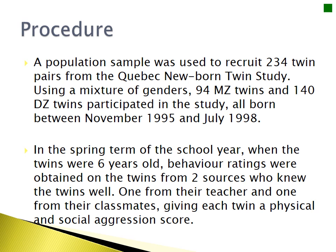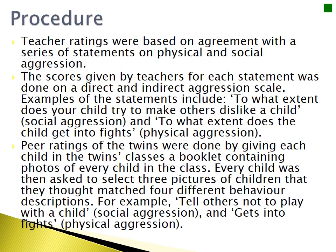In the spring term of the school year when the twins were six years old, behaviour ratings were obtained from two sources who knew the twins well: one from the teacher and one from their classmates. Each gave the twin a physical and a social aggression score. The teacher ratings were based on agreement with statements on direct and indirect aggression scales. Examples include: 'to what extent does your child try to make others dislike a child,' which is social aggression, and 'to what extent does the child get into fights,' which is physical aggression.